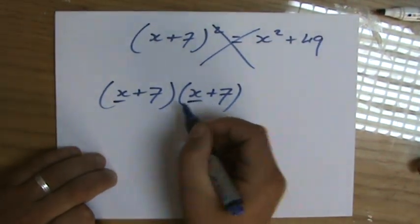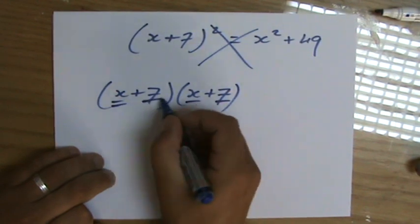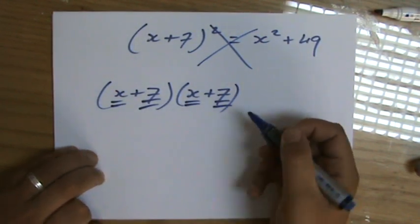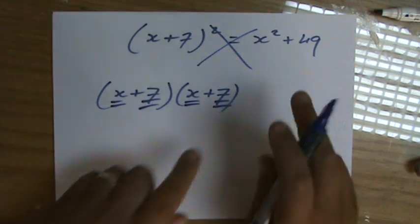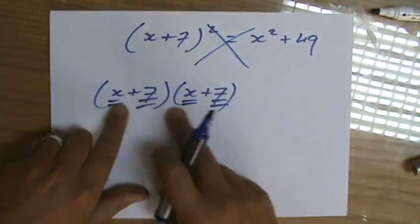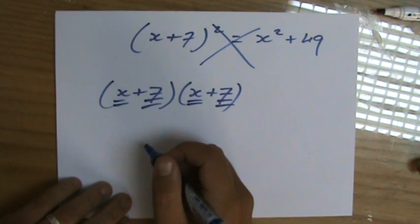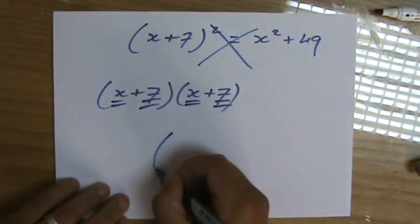So actually, you have to use the FOIL method: x times x, x times 7, 7 times x, 7 times 7. So do not make that classic mistake, it is the FOIL method.